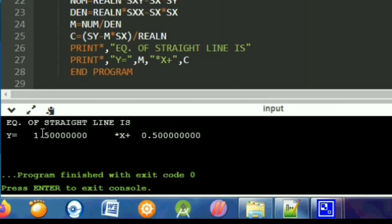Equation of straight line is y equals, then m value print, then star x plus and then c value print. So this is our straight line equation: y equals mx plus c. Here I have n equals 2 points.